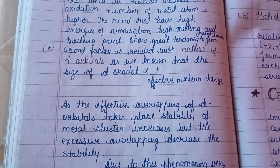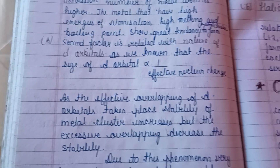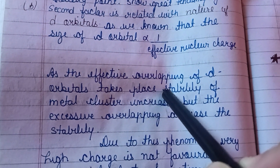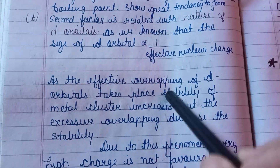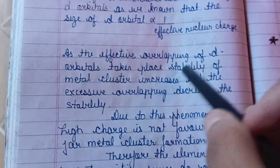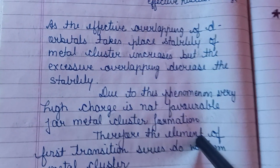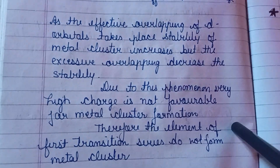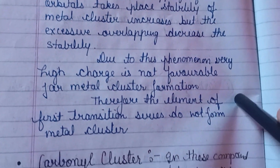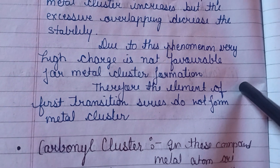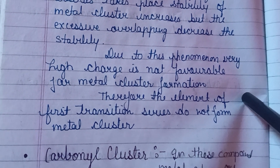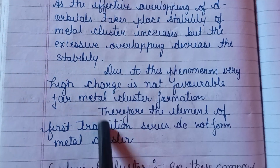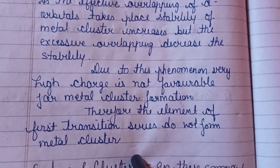The second factor is related to the nature of the orbital. The size of the orbital is inversely proportional to the effective nuclear charge. As effective overlapping of the orbitals takes place, the stability of the metal cluster increases. However, excessive overlapping decreases stability, so very high d-orbital overlap is not favorable for metal cluster formation.